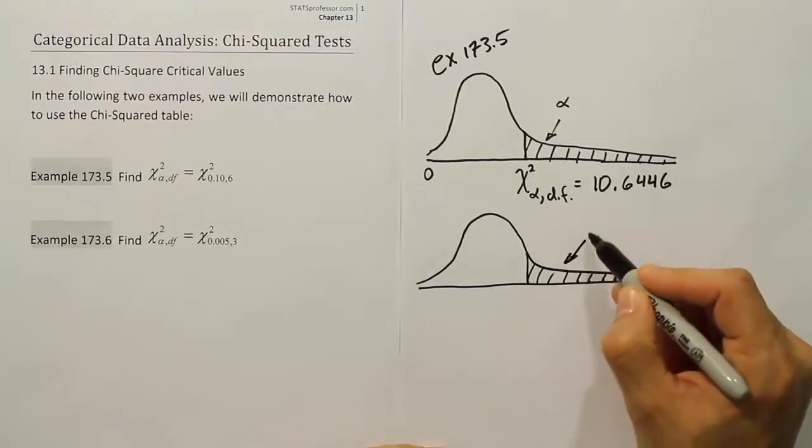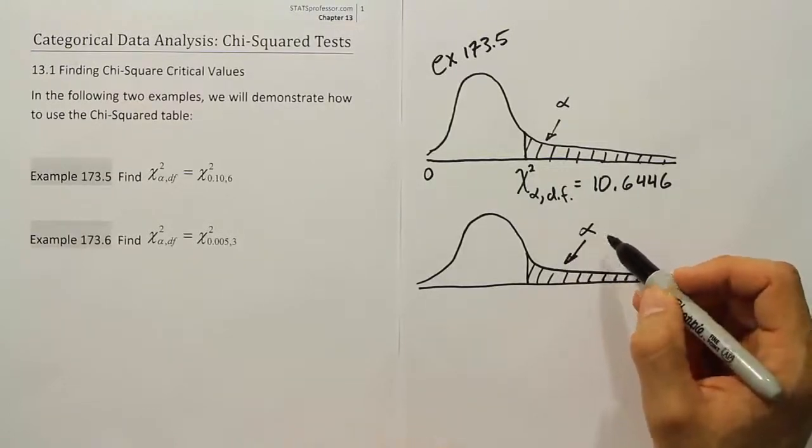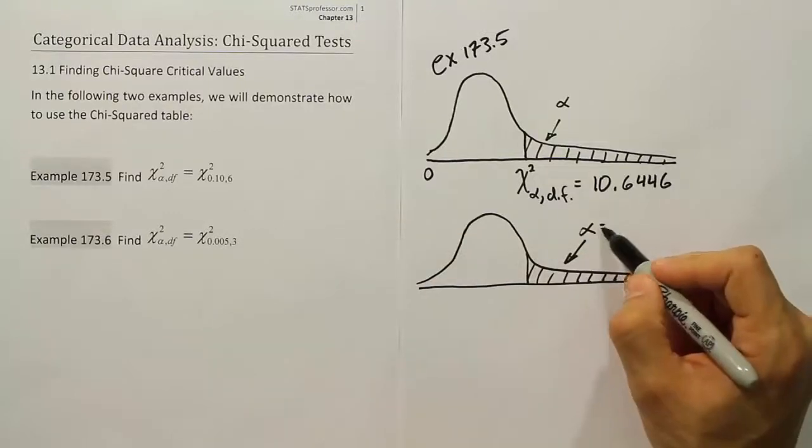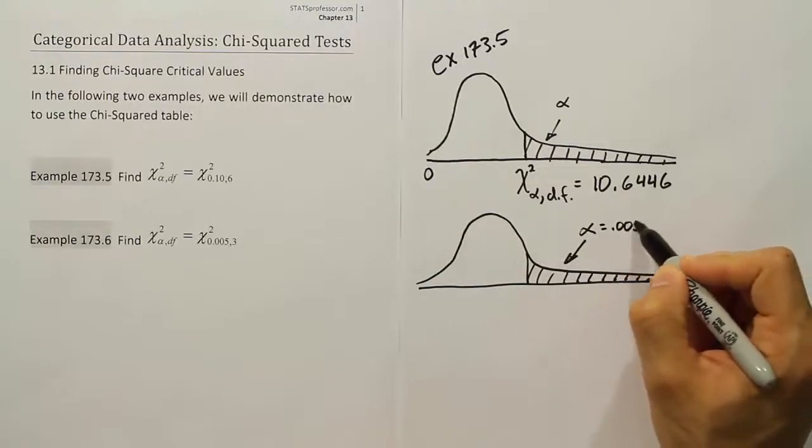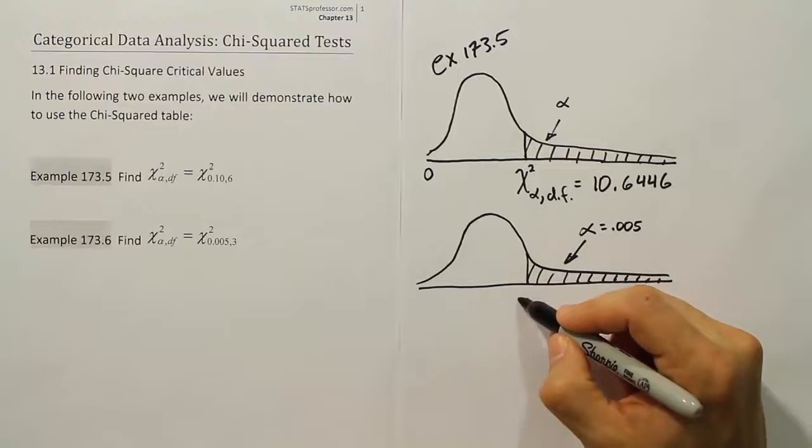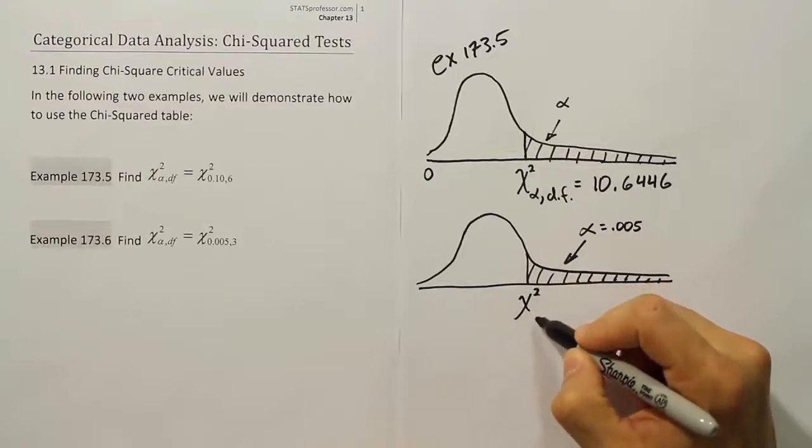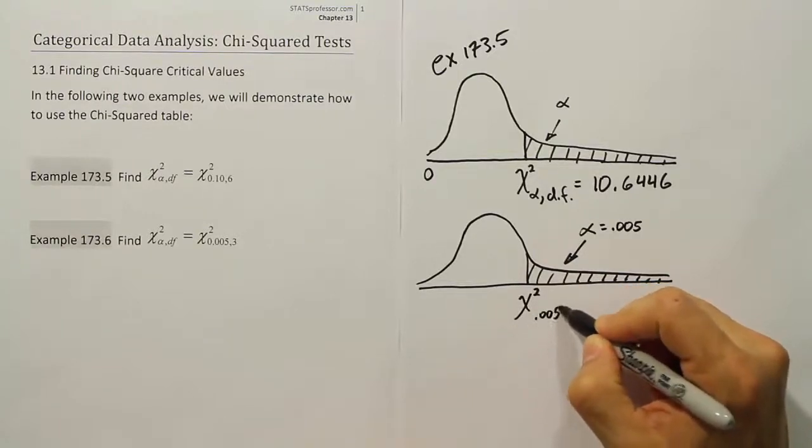We're going to say that the area in this tail is again equal to alpha. In this particular problem, that alpha is going to be 0.005. And the degrees of freedom for our chi-squared value is going to be 3 in this next problem.